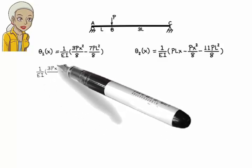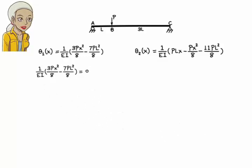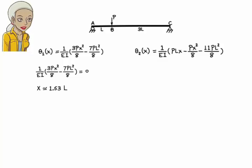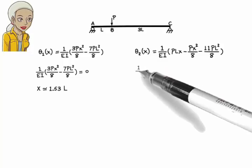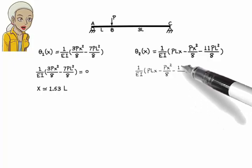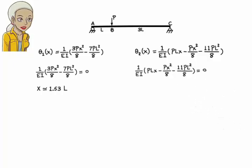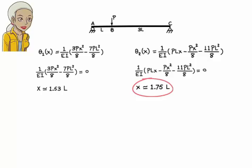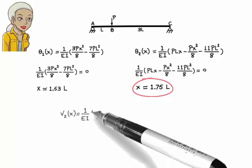Therefore, maximum deflection must occur in the right segment. Setting θ2 equal to zero and solving for x, we get x = 1.75L. Since this value is between L and 4L, we conclude that maximum deflection in the beam occurs in the right segment at x = 1.75L. We can then determine the value of maximum deflection by evaluating V2 at this point.